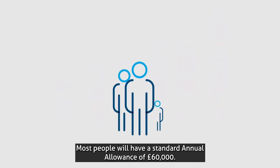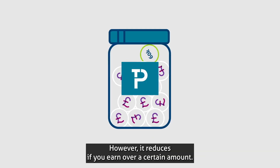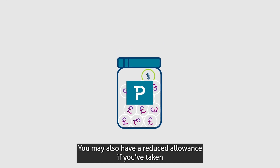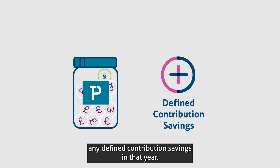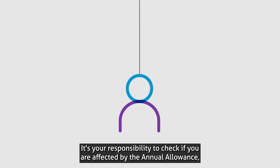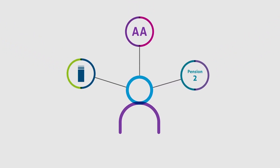Most people will have a standard annual allowance of sixty thousand pounds. However, it reduces if you earn over a certain amount. You may also have a reduced allowance if you've taken any defined contribution savings in that year.